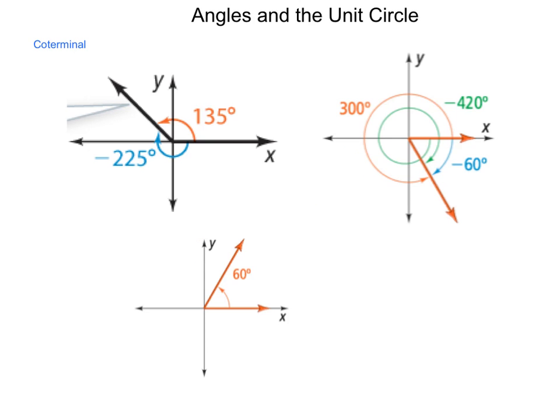The angles that are shown here, in this top left-hand diagram, are the same angle. We can either open a positive 135 degrees, or a negative 225. Both of them are the same, so these are what are considered coterminal angles.